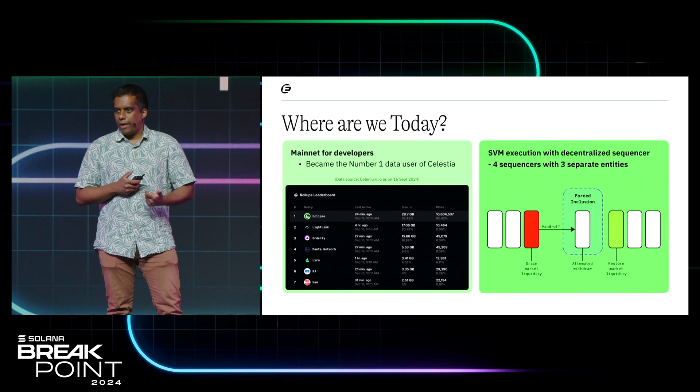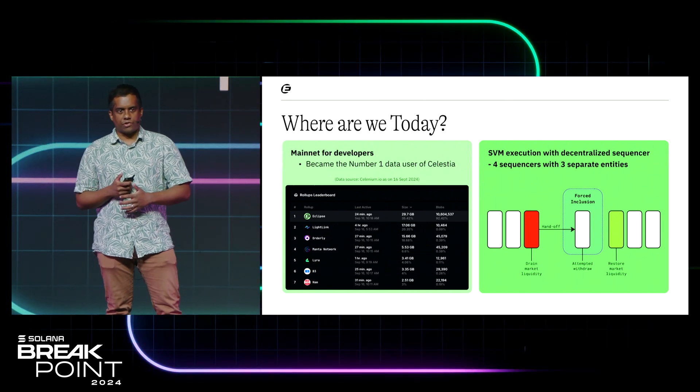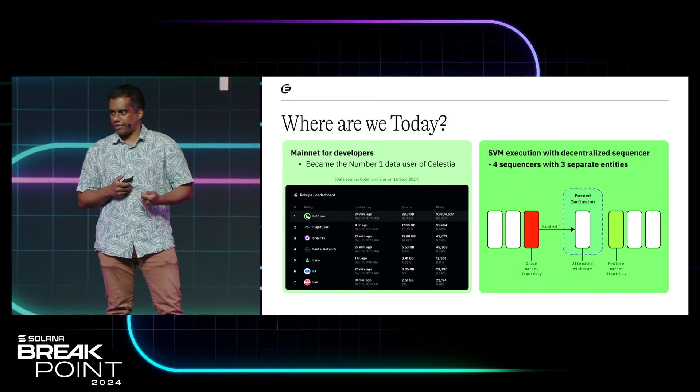So where are we today? Eclipse is currently on developer mainnet, and we are currently the number one data user of Celestia — by volume of data published in blocks to Celestia, we're at the top of the leaderboard. A lot of that right now includes things like votes and other items we're looking to streamline over time, but we think it's a good early data point. And as we move to public mainnet, you'll start to see a lot of that be actual transactions.